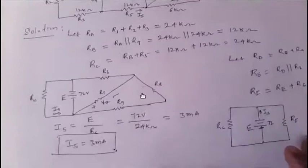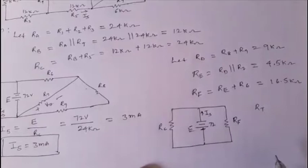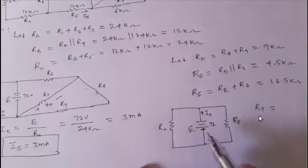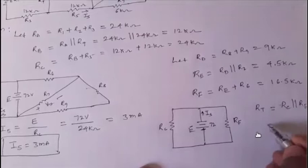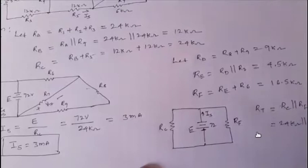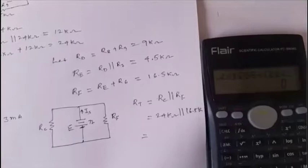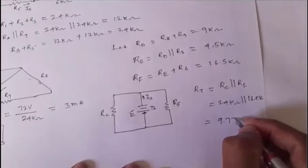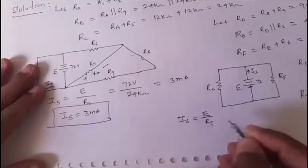The total network resistance is rt = rc parallel rf. With rc = 24 kΩ and rf = 16.5 kΩ: rt = (24 × 16.5) / (24 + 16.5) = 9.7778 kΩ.